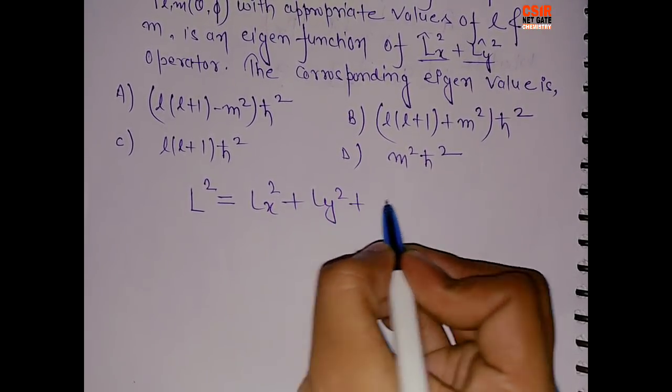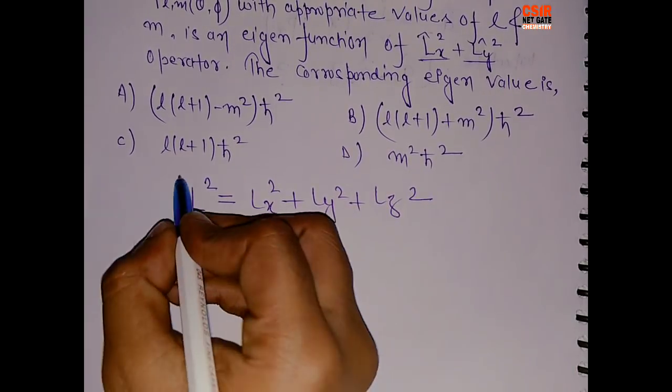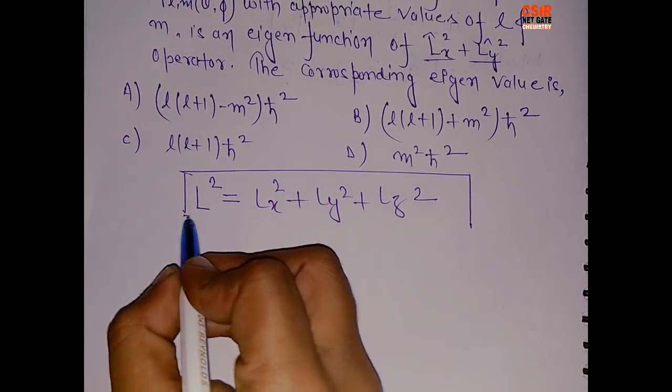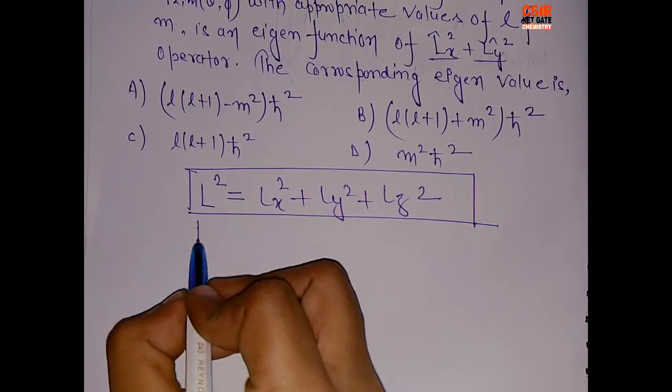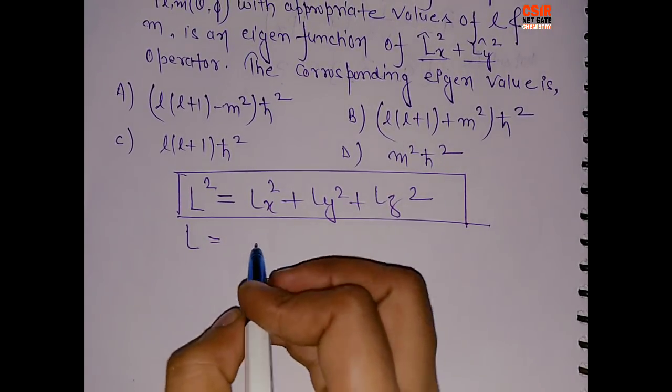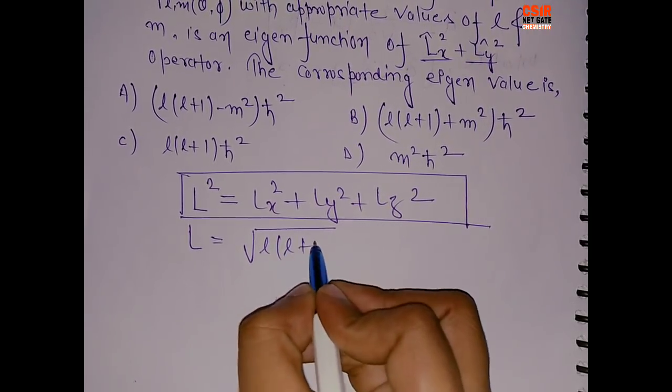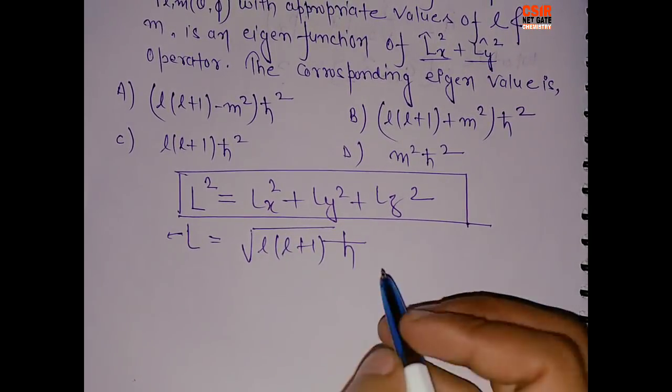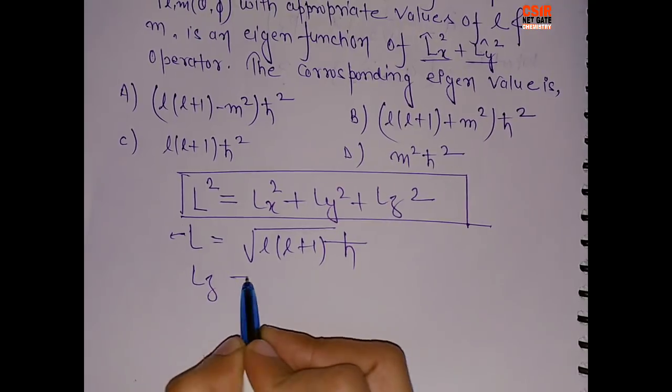LY² + LZ². This thing everybody knows. Now there is one more formula which we are reading from BSc: L = √(L(L+1))ħ, and one more thing, LZ, and that